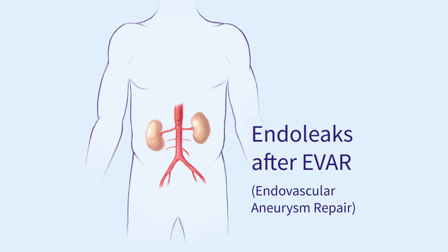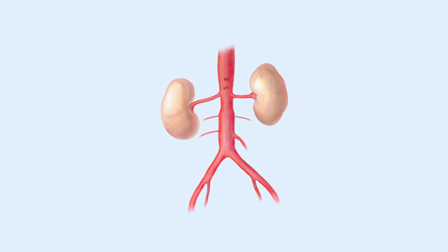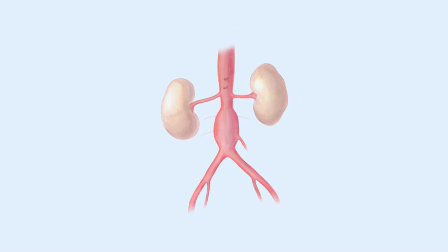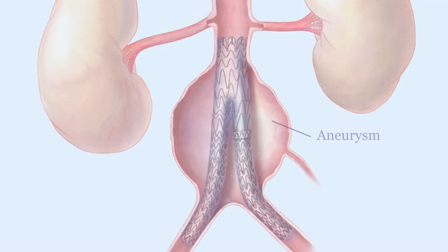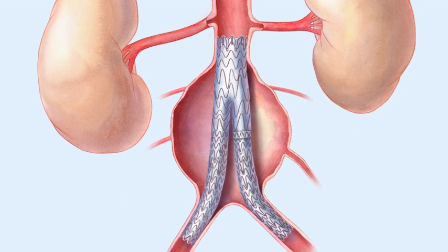Endo-leaks after endovascular aneurysm repair. An abdominal aortic aneurysm can be treated by a minimally invasive procedure that places a stent graft inside the abdominal aorta. The stent is designed to protect the integrity of the aortic wall.